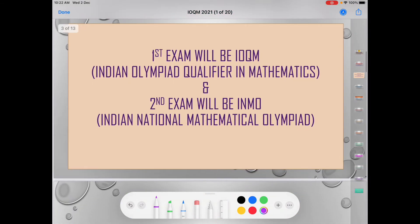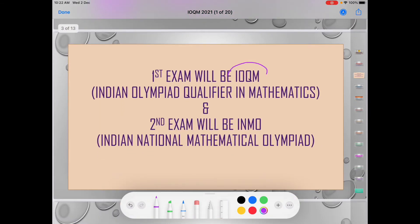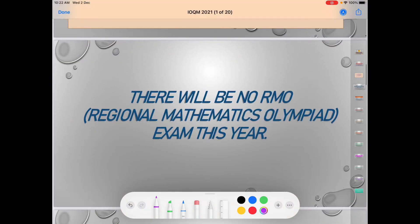So this is a big change — now we will have two exams. The first exam will be the Indian Olympiad Qualifier in Mathematics (IOQM), and after qualifying IOQM, candidates will directly appear in INMO — the Indian National Mathematical Olympiad — as the second exam. There will be no RMO exam this year.